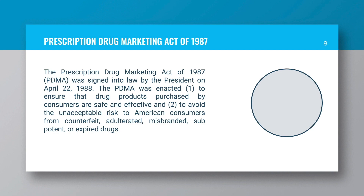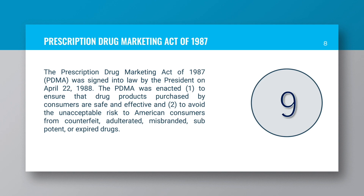Prescription Drug Marketing Act of 1987: The Prescription Drug Marketing Act of 1987 was signed into law by the President on April 22, 1988. The PDMA was enacted: one, to ensure that drug products purchased by consumers are safe and effective; and two, to avoid the unacceptable risk to American consumers from counterfeit, adulterated, misbranded, sub-potent or expired drugs.